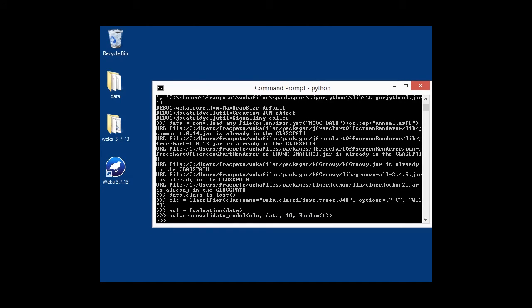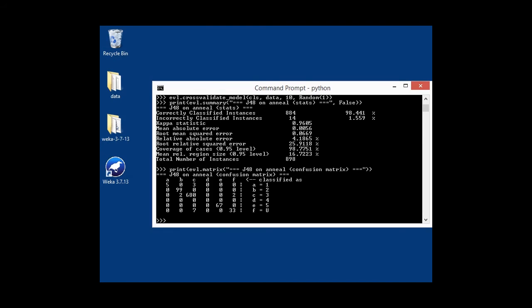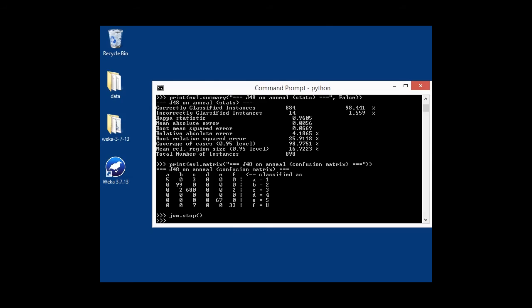And now we can also output our evaluation summary. Done. And this is simply with evaluation.summary, the title, and we don't want to have any complexity statistics being output. And since in our Jython example we also had the confusion matrix, we're going to output that as well. And here's our confusion matrix. And one thing you should never forget is, once you're done, you also have to stop the JVM and shut it down properly.